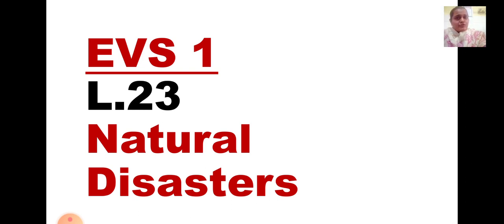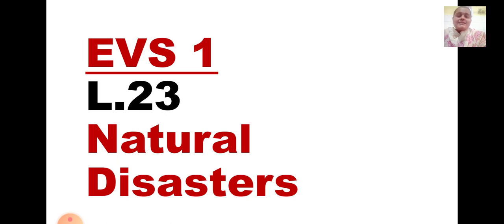What do you mean by natural disasters? Natural disasters are some dangerous events that happen naturally. They are not man-made; they happen because of imbalance in nature. That is why these disasters take place, which are very dangerous to humans, animals, plants, and everyone on the earth. So let us learn in detail about natural disasters and start by learning the new words.